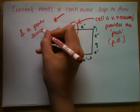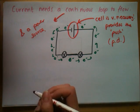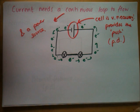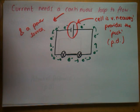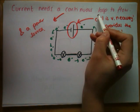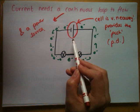To recap: current is the flow of charged particles, measured in amps, with symbol I. It usually flows in a conductor because there are lots of electrons free to move. It needs a continuous loop to flow, and it needs a power source to push it.